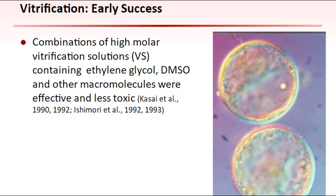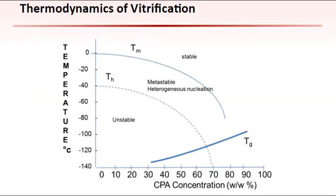Early attempts at vitrification revealed that an effective combination of vitrification solutions composed of ethylene glycol, DMSO, and other macromolecules reduced the potential cytotoxicity and viscosity compared with the use of individual cryoprotective agents. The added molecules serve to increase solution viscosity and increase the potential efficiency of forming a glass-like solid devoid of ice formation under rapid cooling and warming. The complex thermodynamics involved in vitrification depend on the rates of cooling and subsequently warming with respect to the total concentration of cryoprotectant.